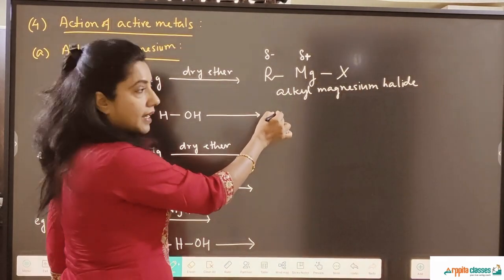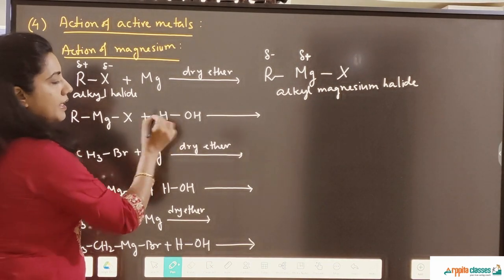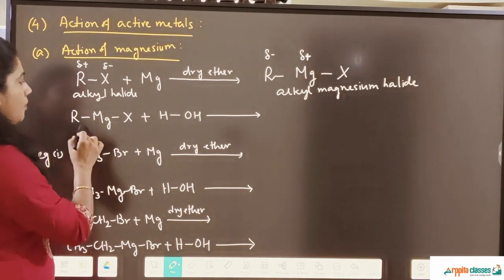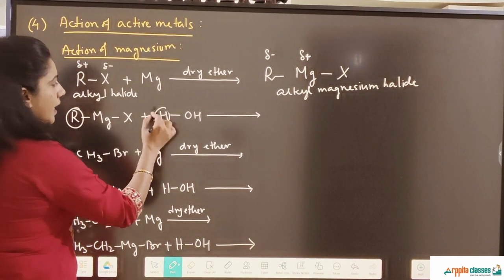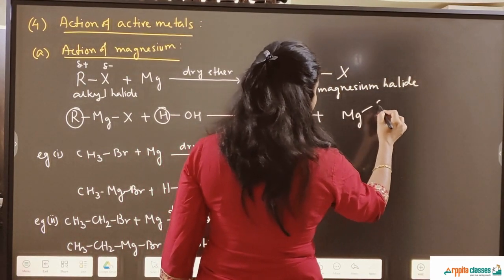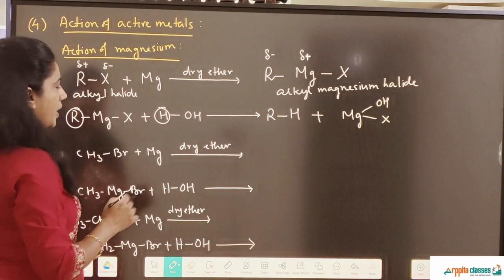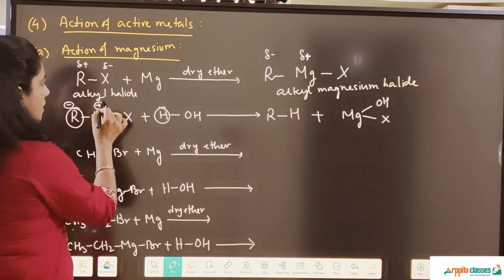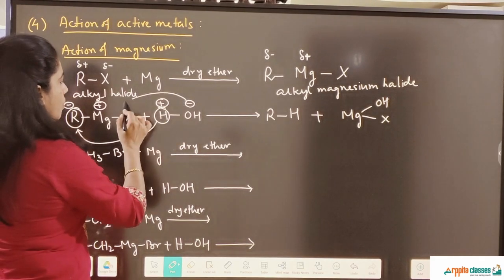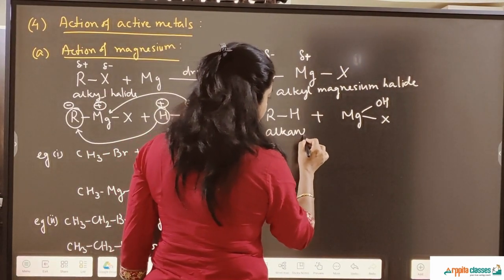R stands for alkyl, Mg for magnesium, and X for halide. In the next step, we are taking the alkyl magnesium halide and reacting it with water. This is a very, very reactive compound. When this reaction happens, the R and H will combine together to give an alkane, and the other product will be Mg(OH)X. The positive part goes with the negative one and the negative part goes with the positive one. So we get alkane.